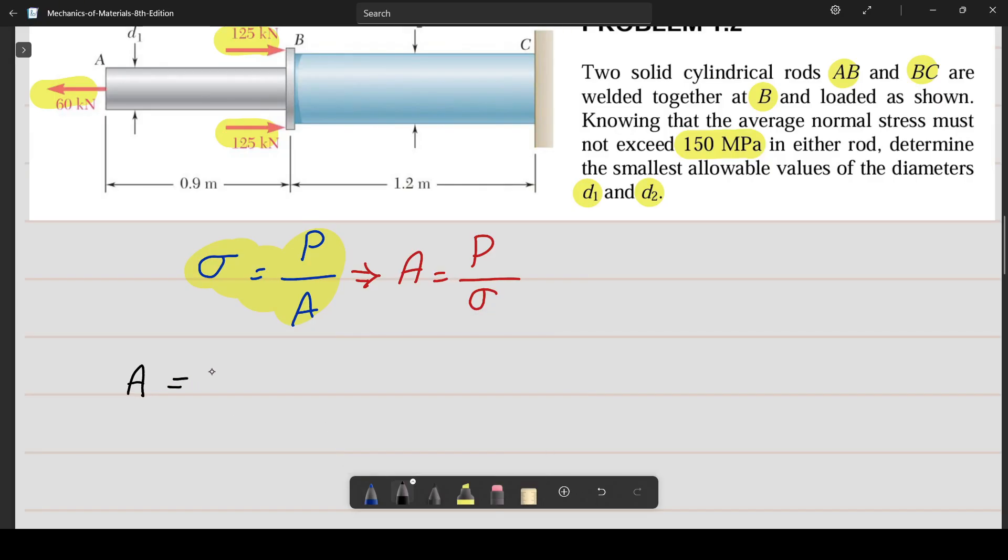The cross section of rod AB is equal to the load applied on AB divided by stress AB, which is 60 kilonewtons divided by the maximum stress given in the question which is 150 MPa. This gives a result of 0.0004 square meters.